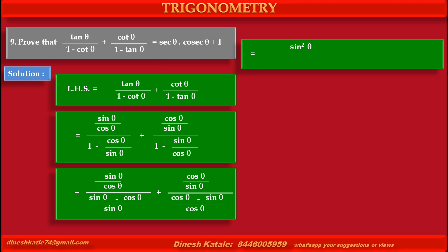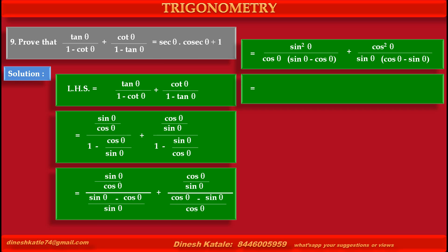Rearranging the fractions, we get numerator sin squared θ upon denominator cos θ into (sin θ minus cos θ). Similarly, in the second term, numerator becomes cos θ upon denominator sin θ into (cos θ minus sin θ), which equals sin squared θ upon cos θ into (sin θ minus cos θ).